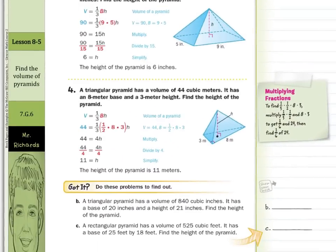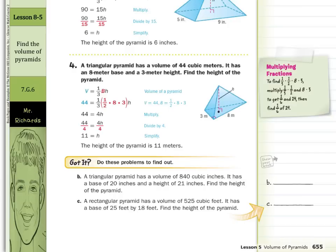A triangular pyramid has a volume of 44 cubic meters. It has an 8-meter base and a 3-meter height. Find the height of the pyramid. Volume equals one-third times the area of the base times the height, and the area of a triangular base is one-half base times height, which is why you see one-half times 8 times 3. Simplifying one-third times one-half times 8 times 3 gives 4. Dividing both sides by 4, the height is 11 meters.